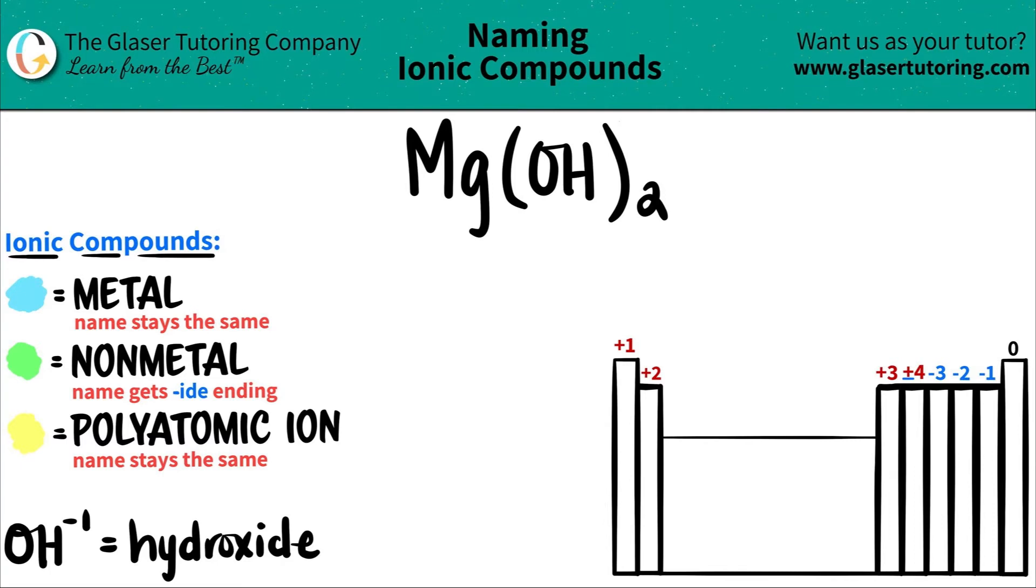Today we are going to be naming the ionic compound Mg(OH)₂. Now here's a little trick: if you have a compound that has three or more different elements in it, you know you're working with at least one polyatomic ion. So I would always identify the polyatomic ion and then work from there.